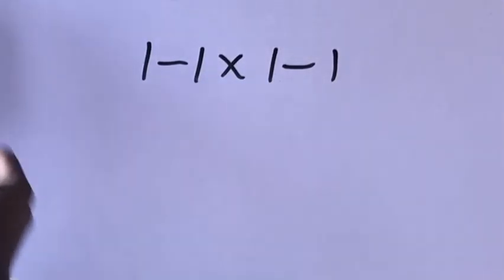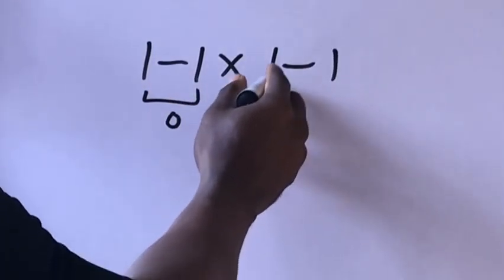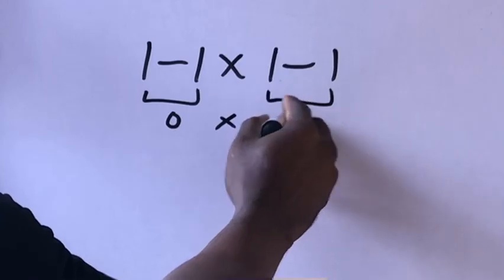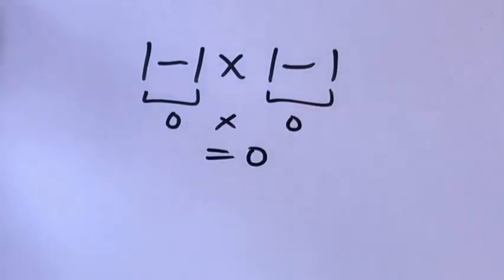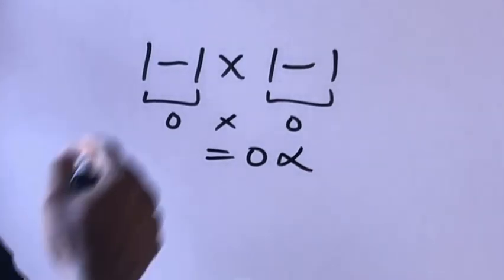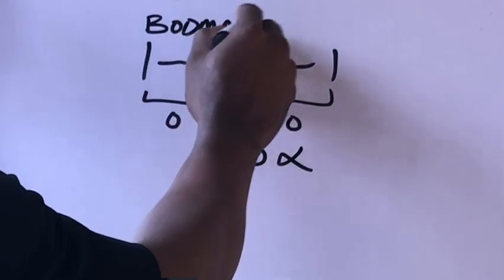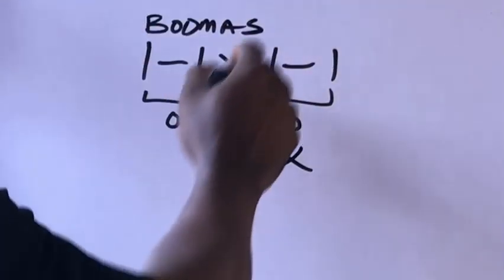One minus one times one minus one. This will give us zero times zero, which equals zero. But this answer is not correct according to our order of operations. Don't forget we are dealing with order of operations.